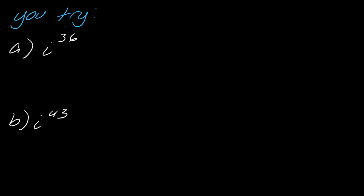So why don't you give these a try? Hit play when you're ready. Okay, so same thing. I've got i to the 36. How many times does 2 go into 36? Well, it goes in 18 times. So now let's work this out. I know that i squared is negative 1. What will negative 1 to the 18th be? Well, it will just be 1. So that's the answer for that one.